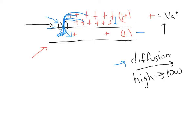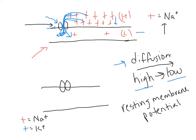Diffusion — the movement of solutes from high to low concentration — does not require any energy. Now, the resting membrane potential: this protein structure right there is called the sodium-potassium pump. It's a protein that pumps ions against their concentration gradient, from low to high concentration, which requires energy. Any time you go from low to high, it requires energy.